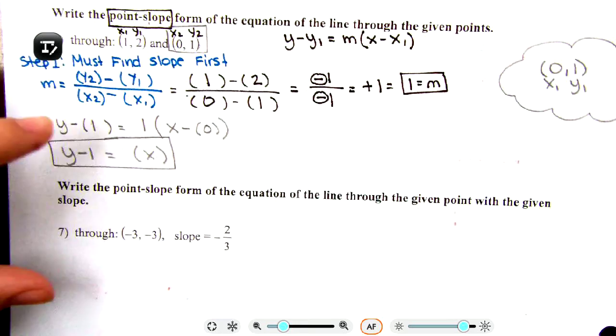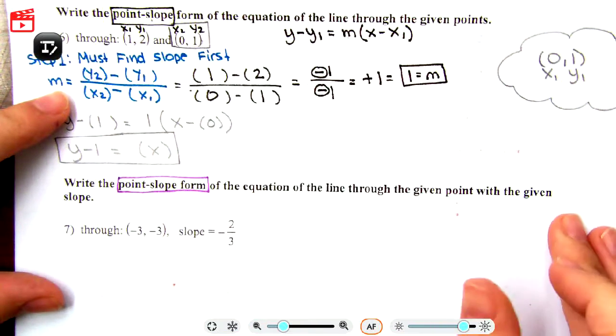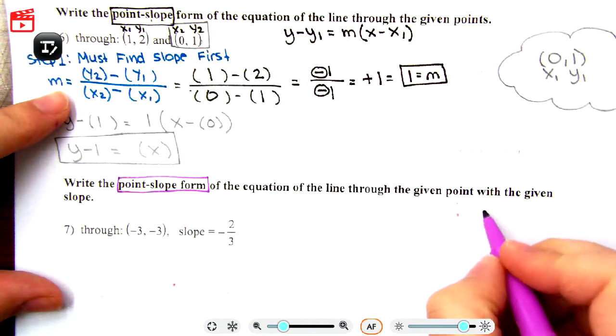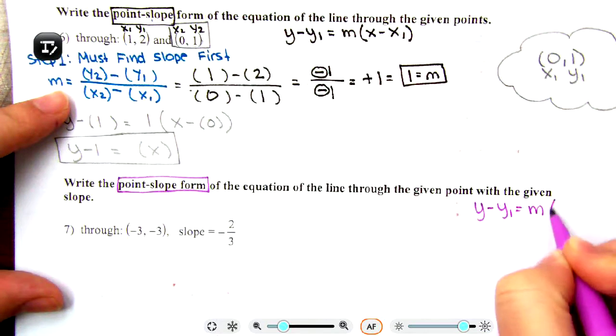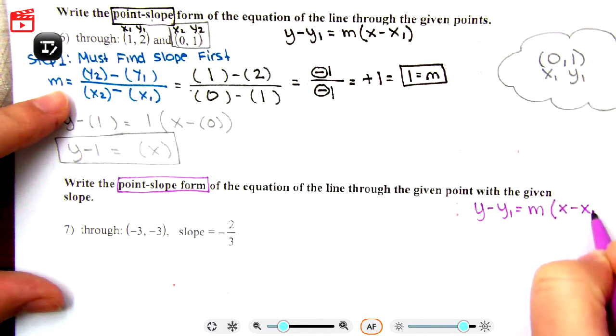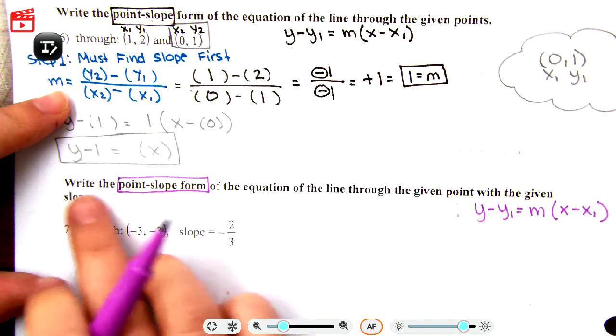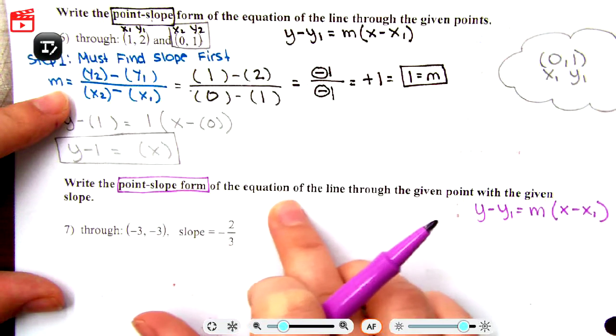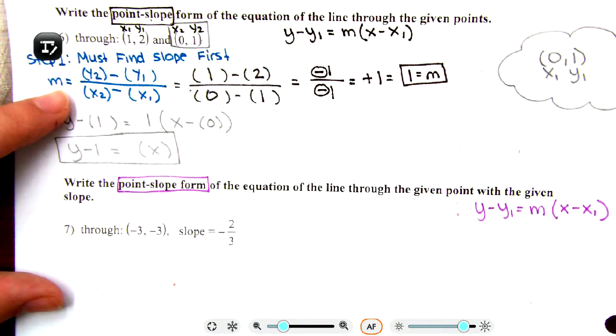Question number 7 says write the point-slope form. Point-slope form - immediately before even finishing the question I know that the form has to be y minus y1 equals m parentheses x minus x1. This is where you have your keep-keep-change.